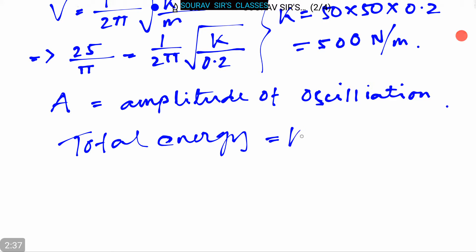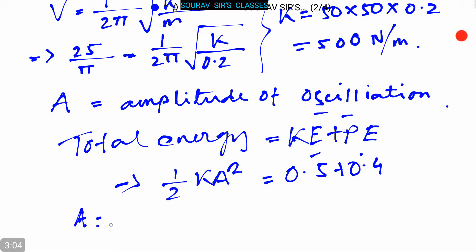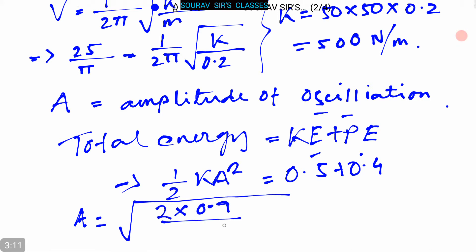The total energy equals KE plus PE, which equals (1/2)kA². This is equal to 0.5 + 0.4. These two values are given in the question, so from this we can write that A equals the square root of (2 × 0.9) divided by 500.